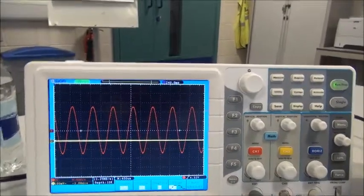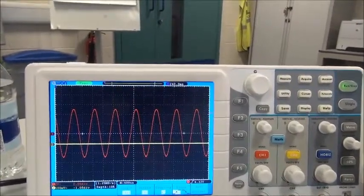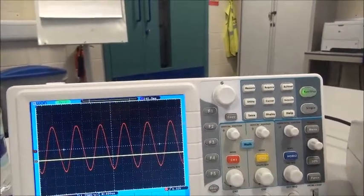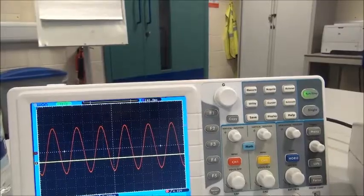So, that's basically how to set up a scope with a function generator. And now the next thing we want to do is connect that up to a circuit, to our circuit.